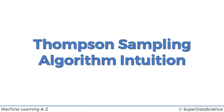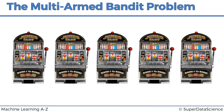Hello and welcome back to the course on machine learning. Today we've got a very interesting topic. We're talking about Thompson sampling and the algorithm's intuition. We're going to be using this algorithm to solve the multi-armed bandit problem. Let's get started.